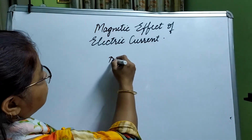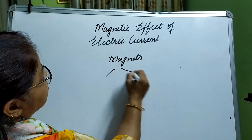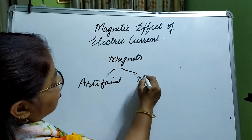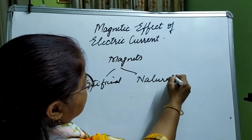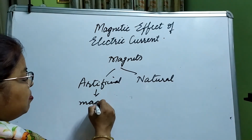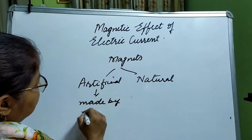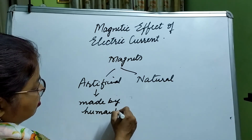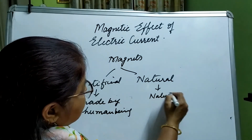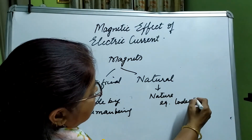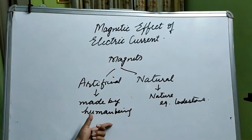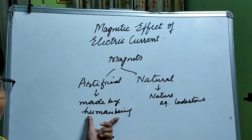Magnets are of two types: artificial and natural. Artificial means they are made by human beings, while natural magnets occur in nature. An example of a natural magnet is lodestone. Artificial, or man-made, magnets are the ones commonly used by us.